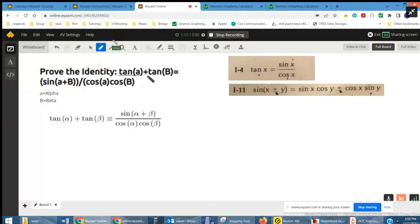We're trying to prove this trigonometric identity: that regardless of the values of alpha and beta, tan(α) + tan(β) is always equal to sin(α+β) over cos(α)cos(β).